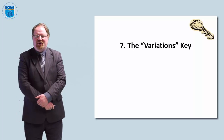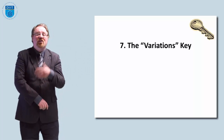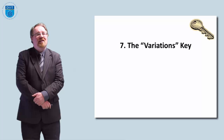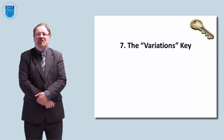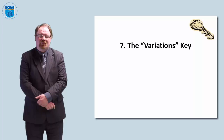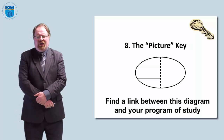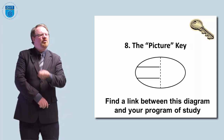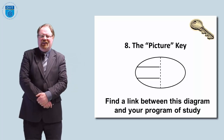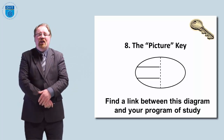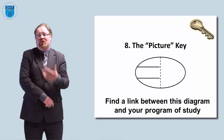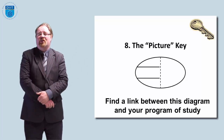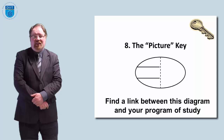The seventh key is called the variations key. So list the alternative ways you can do something. Let's say it's telling the time — list as many different ways as you can of telling the time. The eighth tool is called the picture tool, where you just draw a simple diagram of anything and then ask people to explore that diagram, suggest what ideas it gives them. A simple picture is a good idea usually.